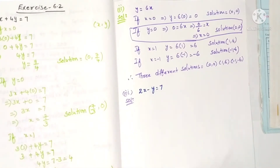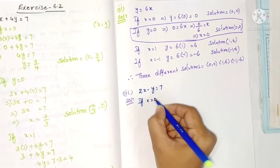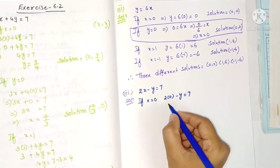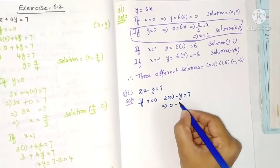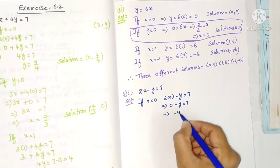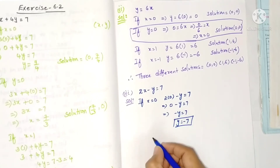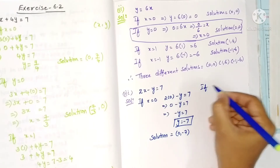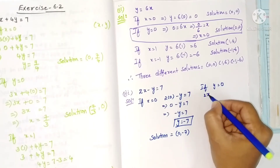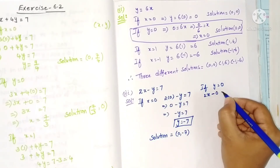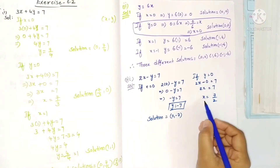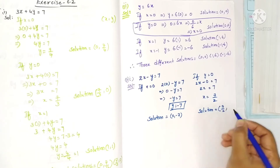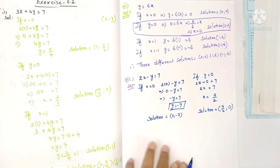Third equation: 2x minus y = 7. Take x = 0: 2 into 0 minus y equals 7, so 0 minus y equals 7, giving y equals minus 7. Solution is (0, -7). Take y = 0: 2x minus 0 equals 7, so 2x equals 7, x equals 7 by 2. Solution is (7/2, 0).